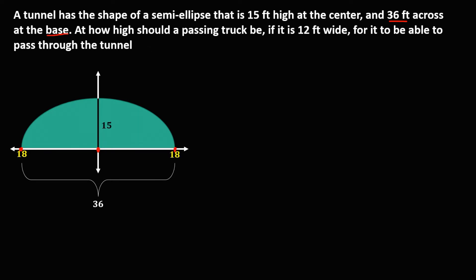Then how high should the passing track be if it is 12 feet wide? So for the 12-feet-wide track, from the center to this point, that's 6, and from the center to this point, also equal to 6. Since we're looking for the height of the track to pass through the tunnel, this one is the unknown, so we only need to pick one point, and we're going to use this point.